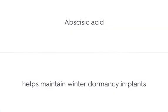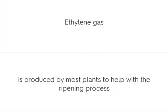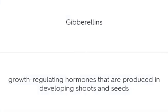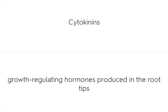Abscisic acid helps maintain winter dormancy in plants. Ethylene gas is produced by most plants to help with the ripening process. Gibberellins are growth-regulating hormones produced in developing shoots and seeds. Cytokinins are growth-regulating hormones produced in the root tips.